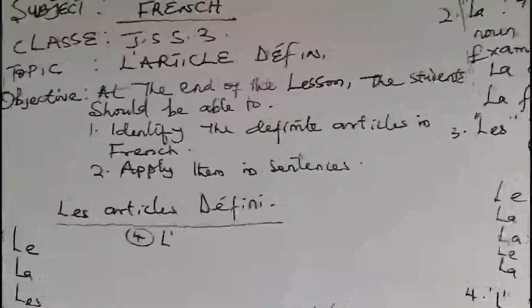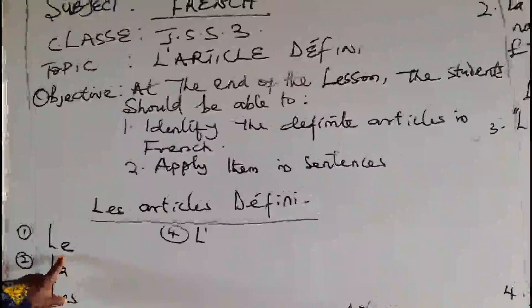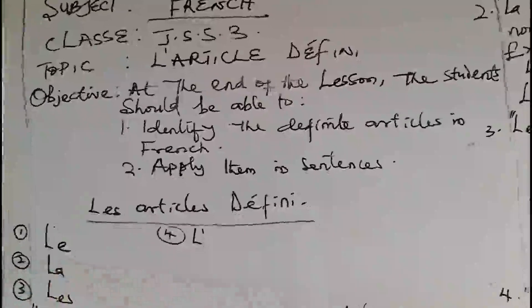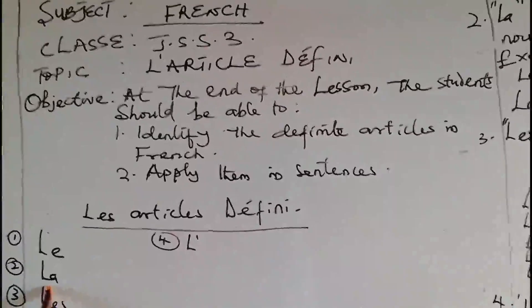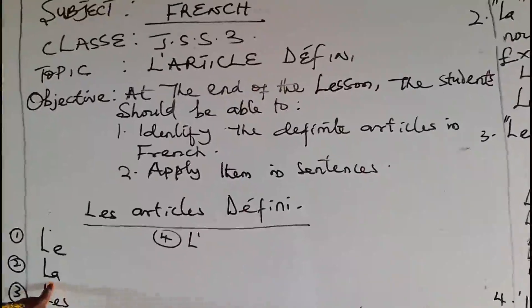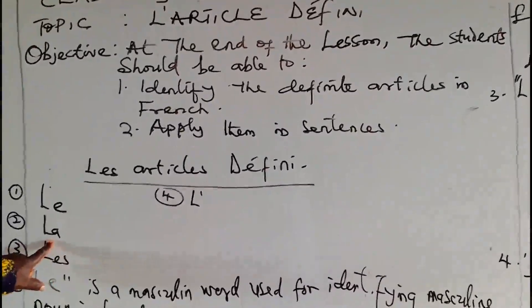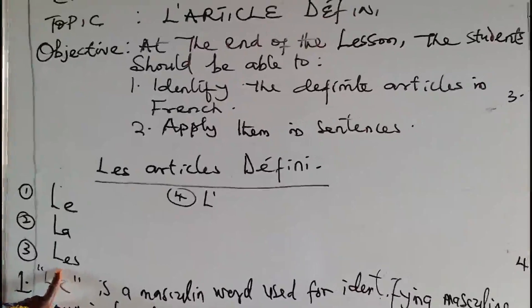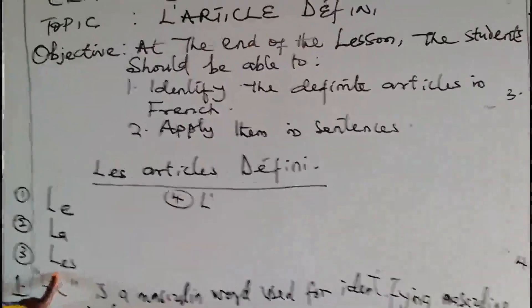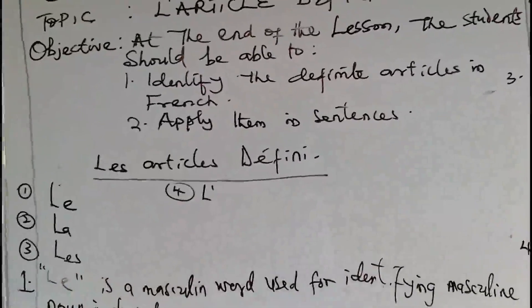In French we have four aspects of definite articles — l'article défini. Number 1, nous avons «le». Repeat after me: le. That is good. Then, number 2, nous avons «la». Repeat after me: la. Encore. Très bien. Number 3, nous avons «les». Répétez: les. Encore. Très bien.